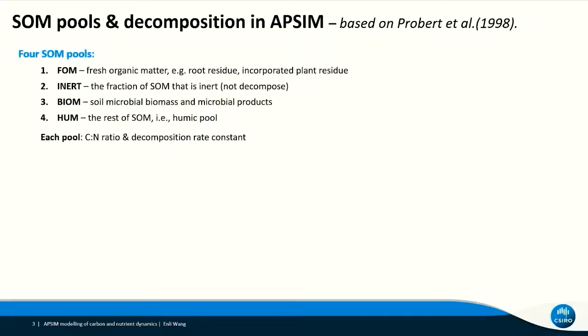Now let's look at EPSIM and how EPSIM simulates soil organic matter dynamics. EPSIM has four soil organic matter pools. The first one is FOM for fresh organic matter in soil, such as root residue and any plant residue that is incorporated into soil. The second one is the inert pool, referring to the fraction of soil organic matter that is inert and does not decompose. The third one is the BOM pool for soil microbial biomass and microbial products. The last one is the HUM pool, the humic pool containing the rest of soil organic matter.